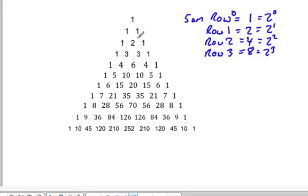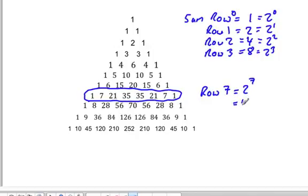And if we count down here, you'll notice here's our row that we were just looking at. And this is row seven. And the sum of the numbers in row seven is two to the seven, which is 128.